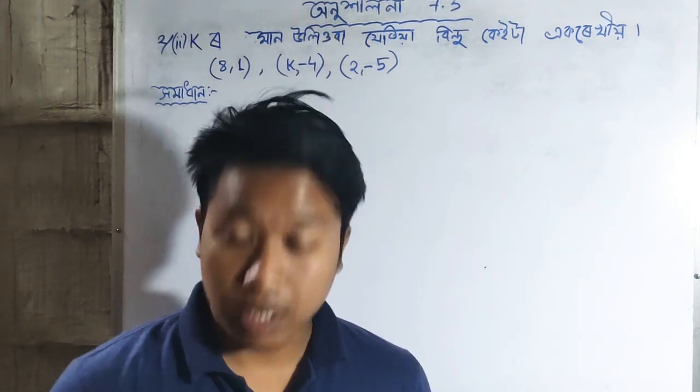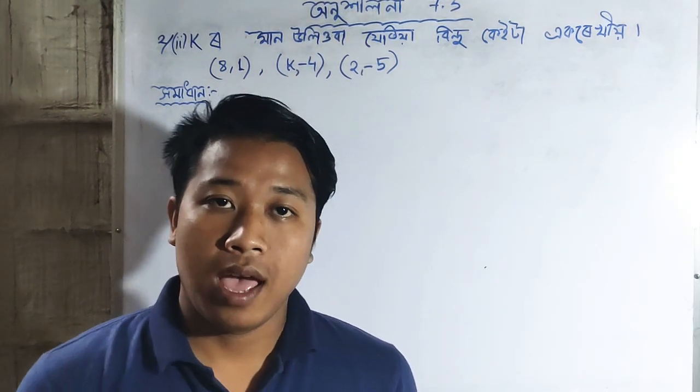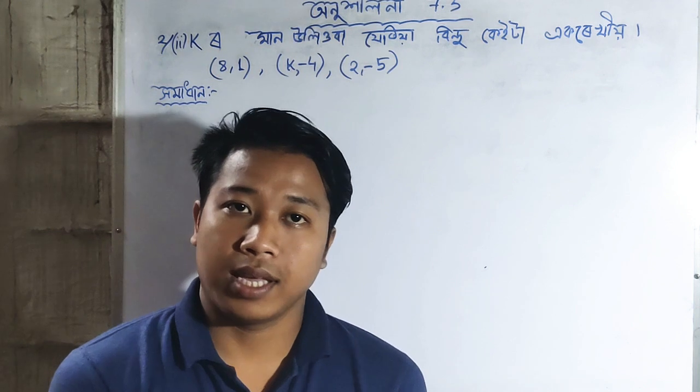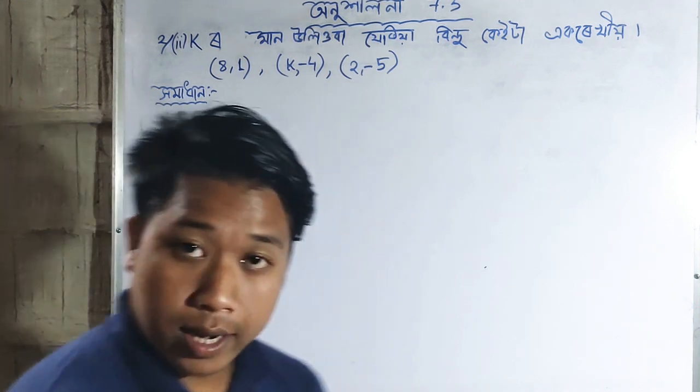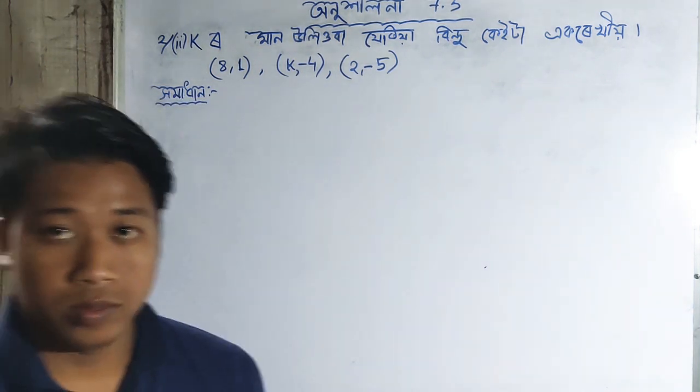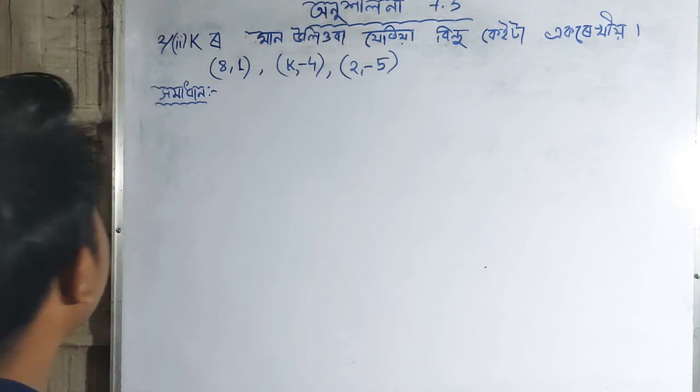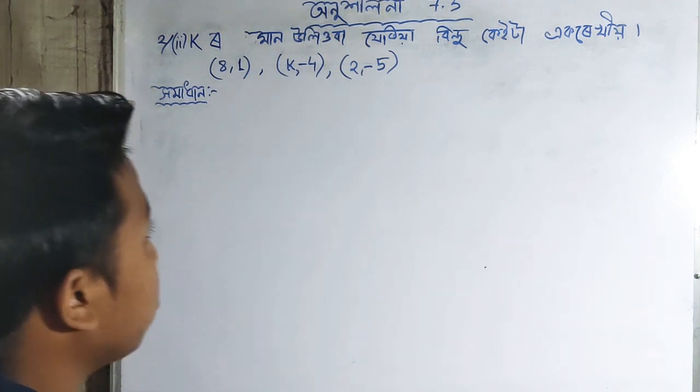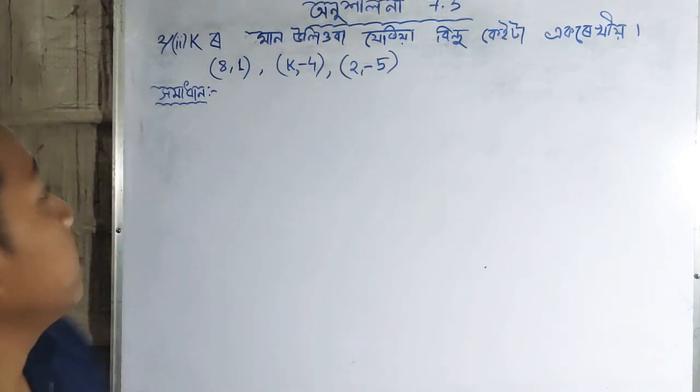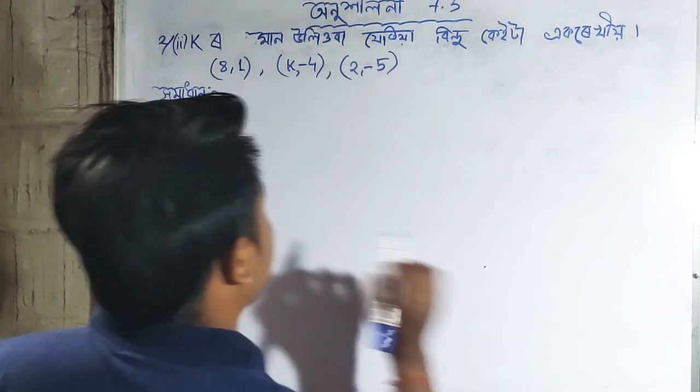Namaskar. I will solve problem 7.3. The question asks: for what value of K are the points (3,1), (K,-4), and (2,-5) collinear? Let's see how to solve this.